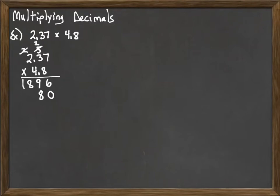Carry the 2. 4 times 3 is 12, plus 2 is 14. Carry the 1. 4 times 2 is 8, plus 1 is 9. And then we just add everything up.